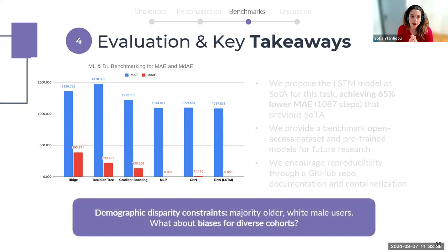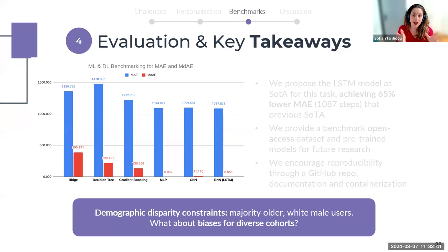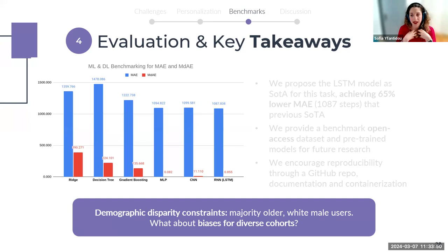Truth is that the My Heart Counts dataset is WEIRD — meaning Western, Educated, Industrialized, Rich, and Democratic — an acronym used a lot in fairness research. Most users are older-aged males. The question is how this affects our benchmark in terms of bias, and we'll refer to this issue again in the holistic alignment section. Algorithmic alignment calls for recognizing user diversity — we approach it through personalization of ubicomp models and the development of reproducible public benchmarks for mobile and wearable use cases.